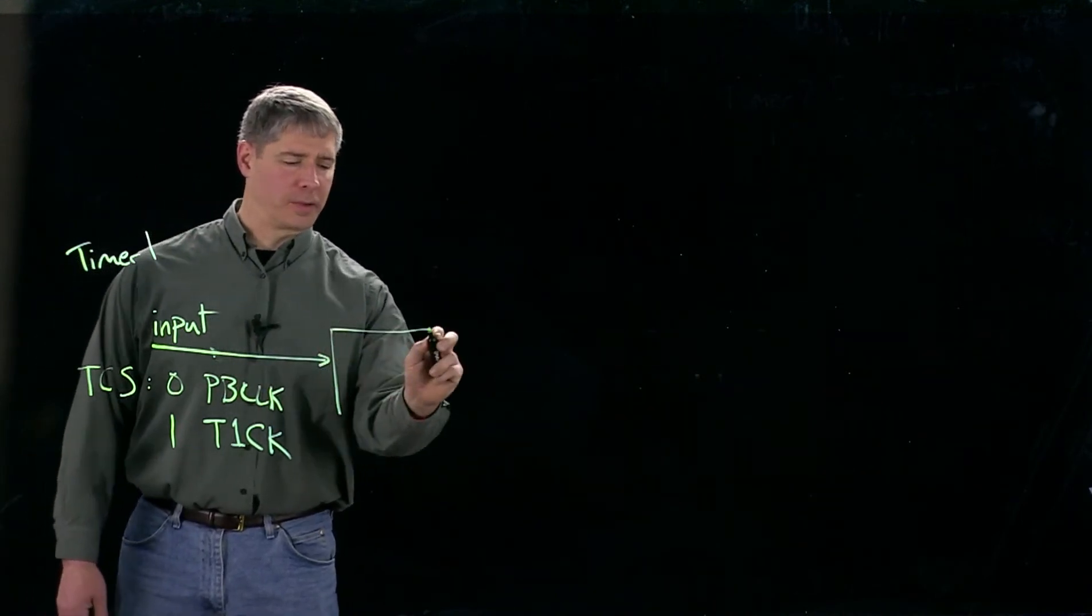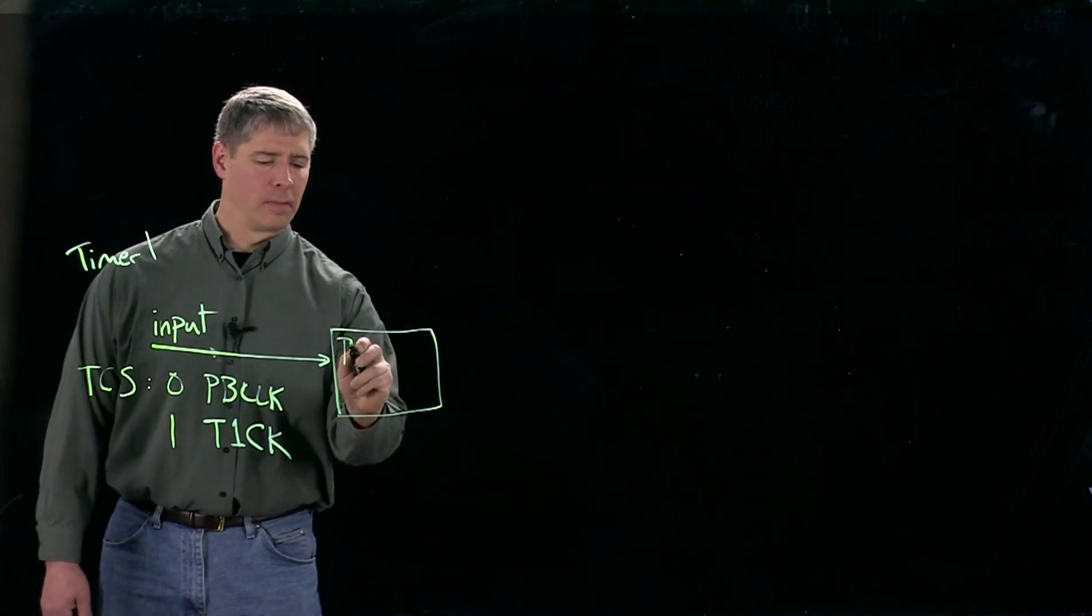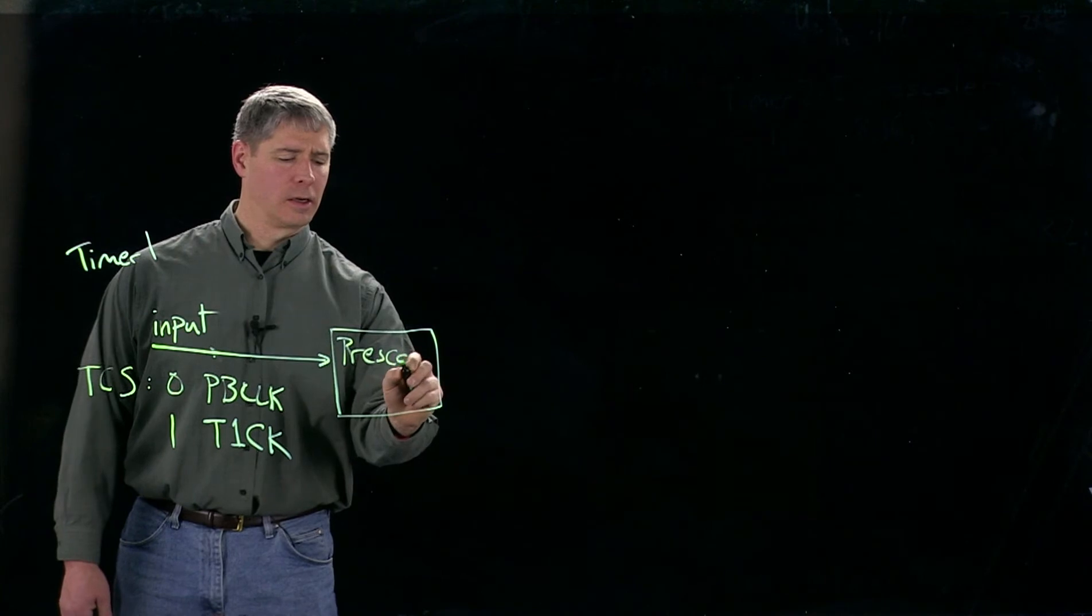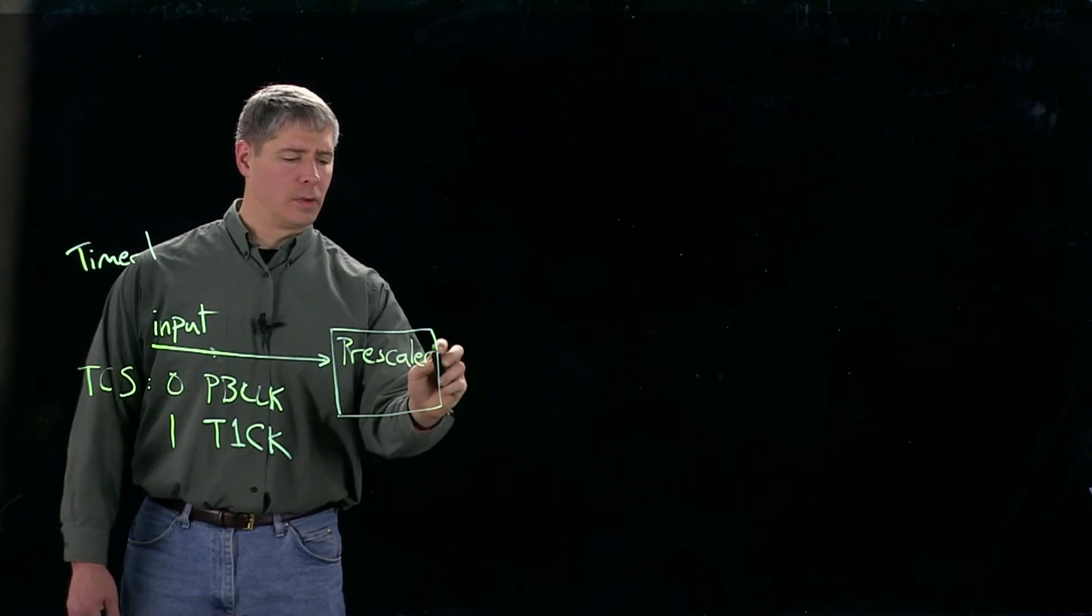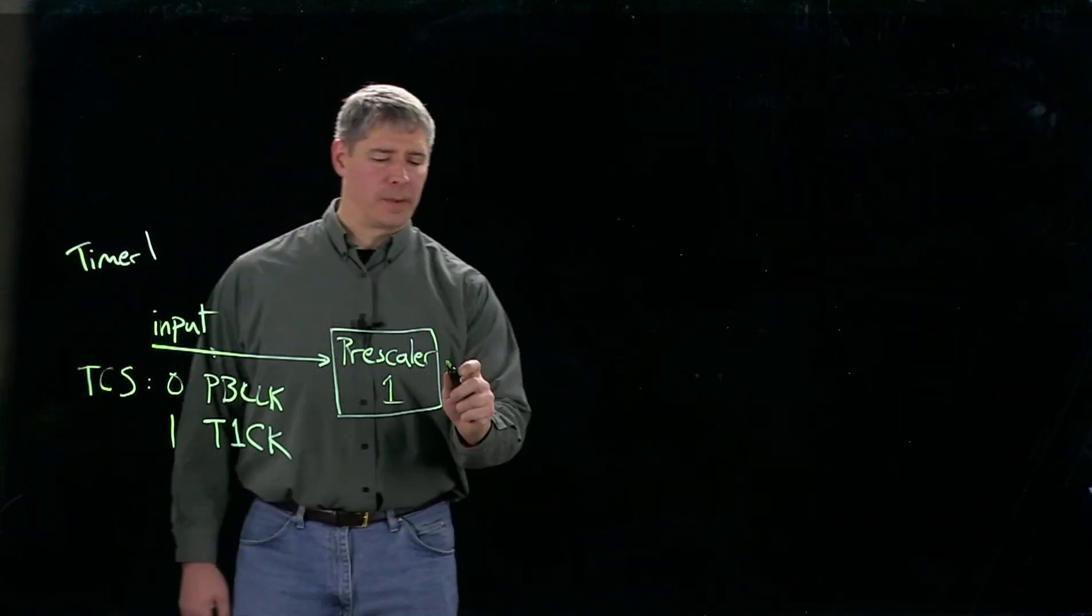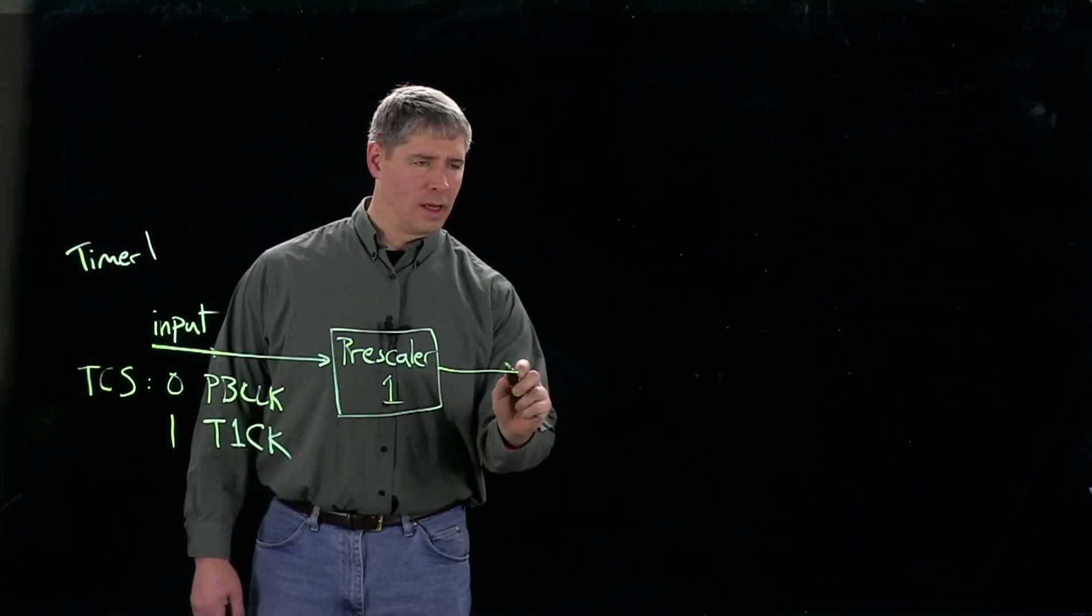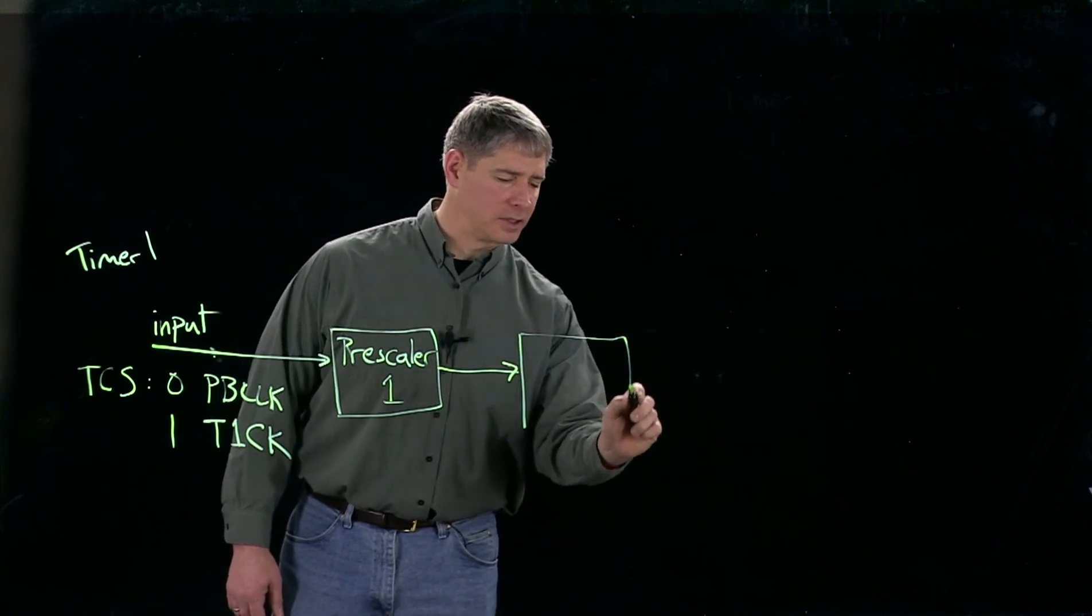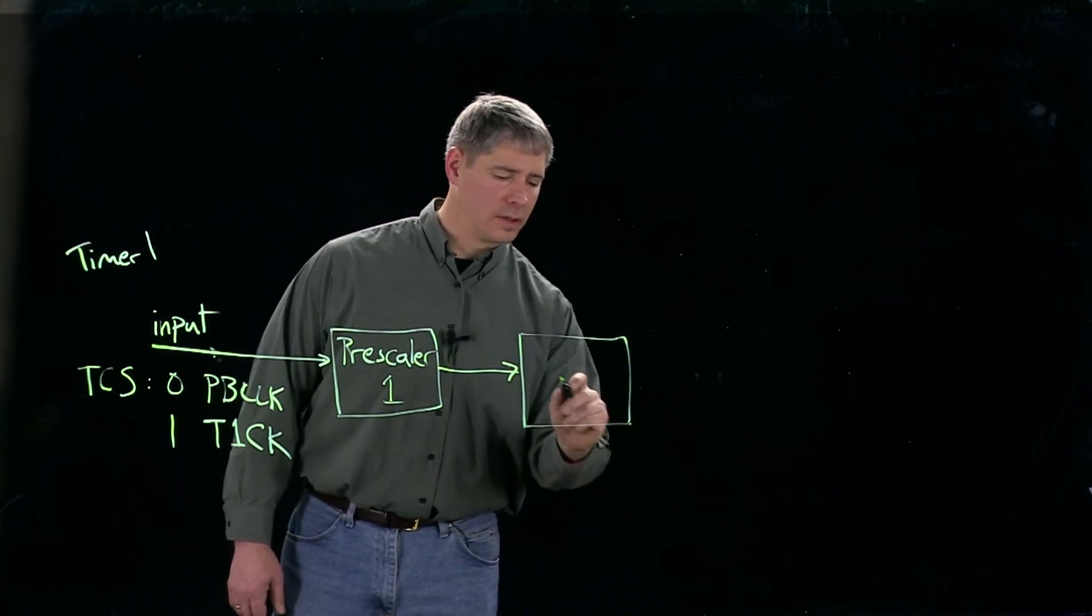It goes over to our pre-scaler, pre-scaler one, which may reduce the number of pulses, and then it goes over to the actual counter itself, timer one.